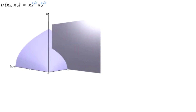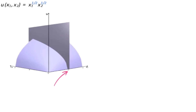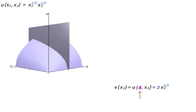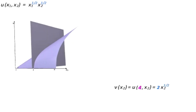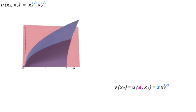Now suppose that we hold the x1 good fixed at 4 units and we define a new function — that's the vertical slice of our original utility function holding x1 fixed at 4. This new function can mathematically be expressed as a function v that's now simply a function of the x2 good because we've set x1 equal to 4. So we get v of x2 equal to 2 times x2 to the 1 half, because when we substitute 4 in for x1 we get 4 to the 1 half, which equals 2. The derivative of v with respect to x2 is simply x2 to the minus 1 half — that's the slope of the slice extracted from the original utility function when we held x1 equal to 4.